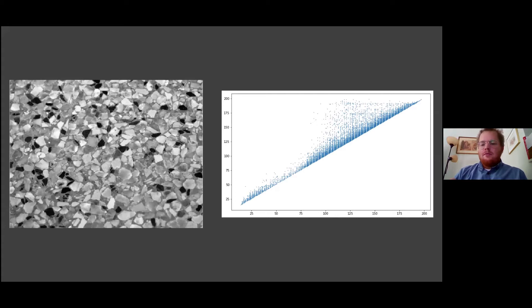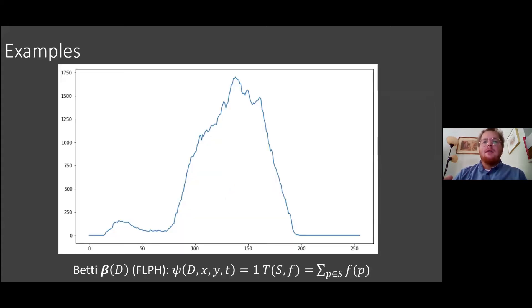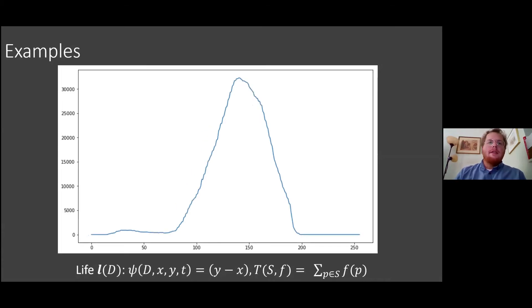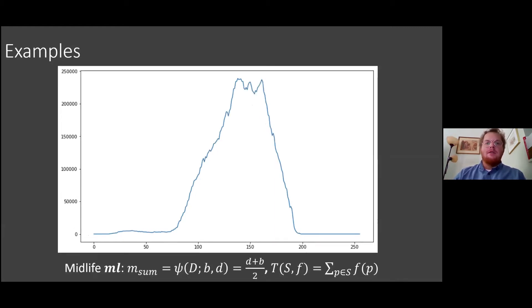For images, the values go from 0 to 255, so all curves share the same x-range. The Betti curve for the diagram shows interesting structure — a nice bump indicating fast development of Betti numbers. The life curve is similarly well-behaved, and the midlife curve also has interesting structure. Each of these curves gives something different and pretty interesting.